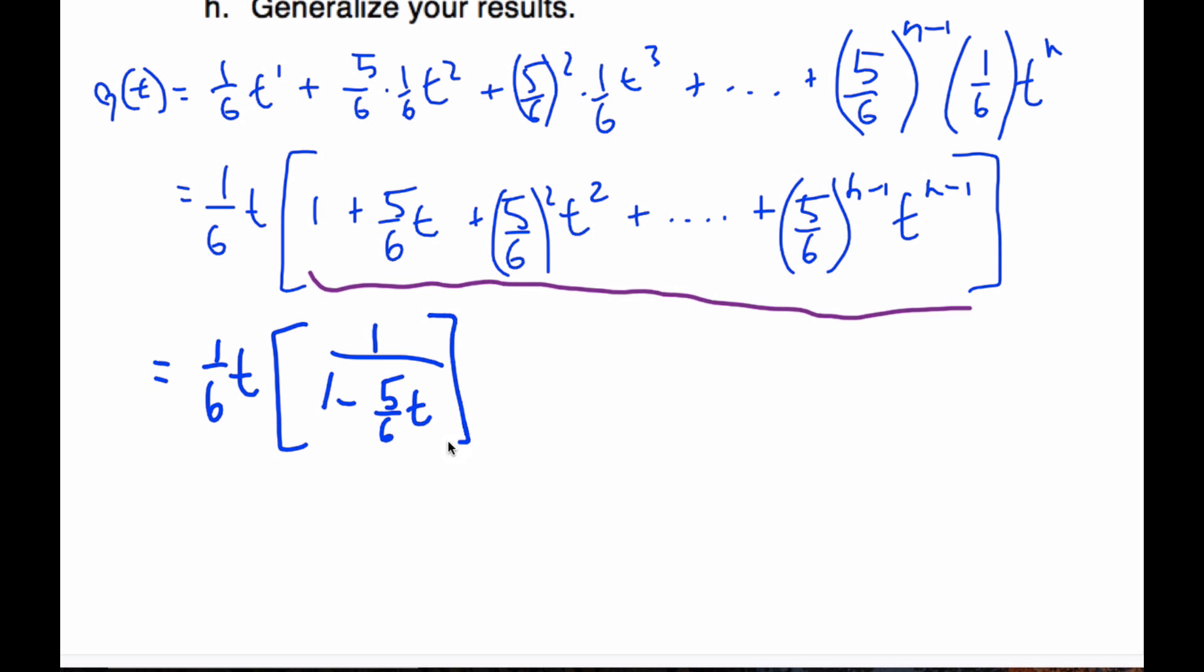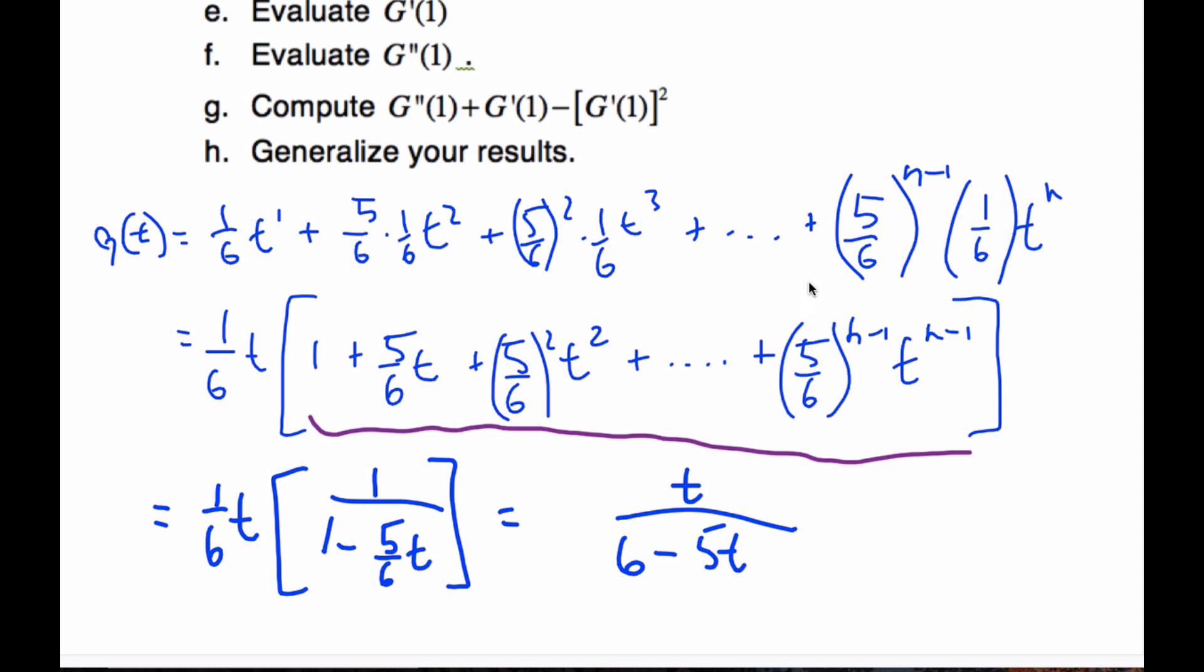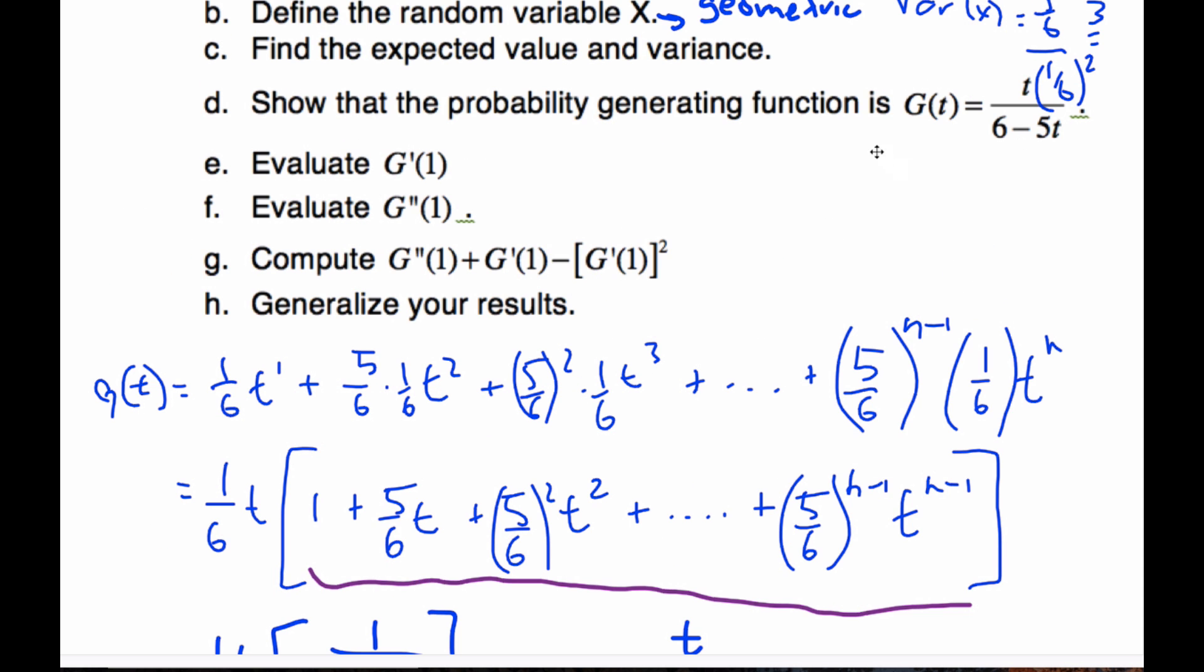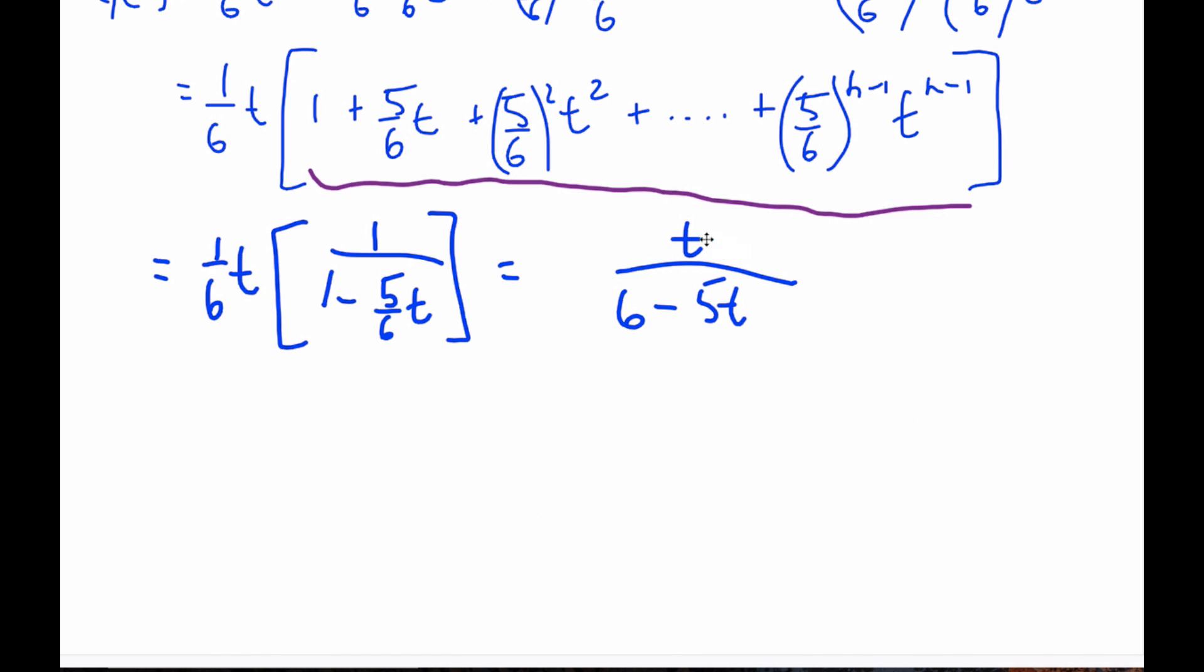Now when I do some algebra here, I distribute this. I get one-sixth T, one-sixth. Let me do it even more clever than that. If I multiply the T on top, one times T and then six times all the other ones, it's going to be six minus five T. And this is exactly the probability generating function, and so that's a derivation of the geometric probability generating function.